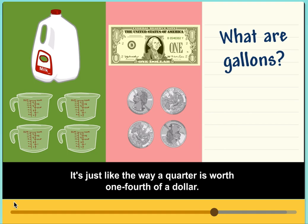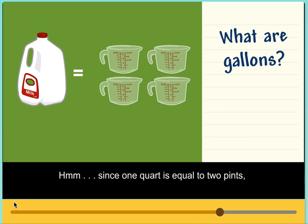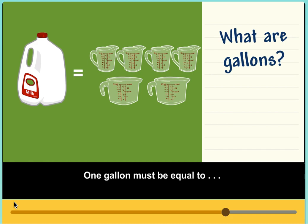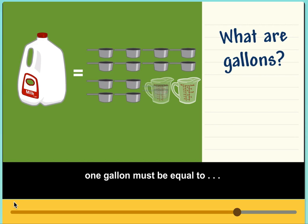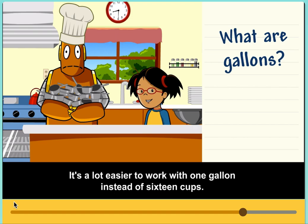Since one quart is equal to two pints, one gallon must be equal to eight pints. Since one pint is equal to two cups, one gallon must be equal to 16 cups. It's a lot easier to work with one gallon instead of 16 cups.